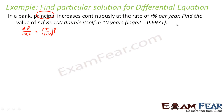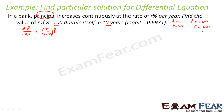We are also told that at t = 0, the principal was 100 rupees, and at t = 10, the principal becomes 200 rupees — because 100 rupees doubles itself in 10 years. This gives us our initial conditions.